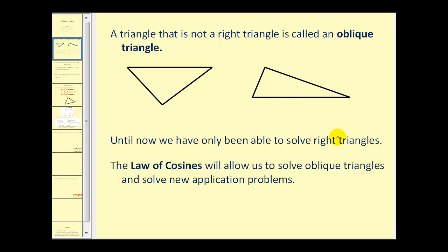Until now we've only been able to solve right triangles. However, the law of cosines does allow us to solve certain oblique triangles.